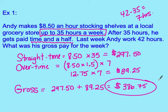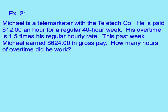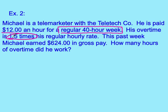That $386.75 is his gross pay — his pay before any taxes are taken out. For our second example, we'll use the same system but with an algebra component added in. Michael is a telemarketer at Teletech Company, paid $12 an hour for a regular 40-hour week. His overtime rate is one and a half times his regular hourly rate. This past week, Michael earned $624 in gross pay. How many hours of overtime did he work?